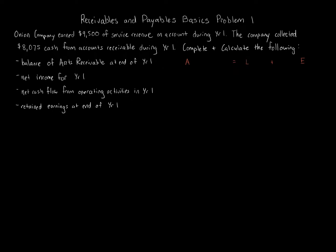Onion Company earned $9,500 of service revenue on account during year 1 — that's transaction A. In assets, anytime you see the phrase 'on account,' you have either accounts payable or accounts receivable. Nothing here says cash is collected, so we have an asset: accounts receivable. Cash is also an account but not affected here. Accounts receivable goes up by $9,500 because $9,500 of services have been performed on account — meaning the client now owes us money in the future.